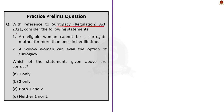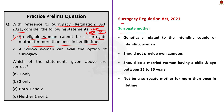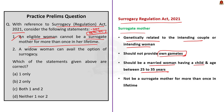The next question is about the Surrogacy Regulation Act 2021, framed because eligibility provisions were challenged in Delhi High Court in November. First statement says an eligible woman cannot be a surrogate mother for more than once in her lifetime — this is correct. Conditions for a surrogate mother under the Act: she should be genetically related to the intending couple or woman; she should not provide her own gametes; she should be a married woman with a child of her own, between 25 to 35 years on the day of implantation; and she cannot be a surrogate mother more than once in her lifetime. The number of surrogacy procedure attempts is specified in Surrogacy Rules 2022.